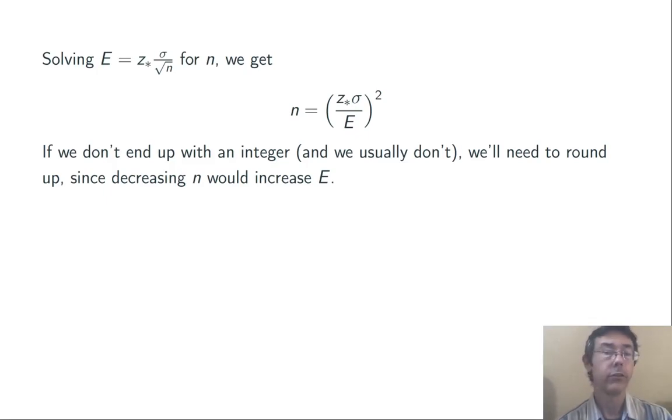Now, if we don't get an integer here, and we usually don't since z* tends to be irrational, we're going to need to round this up. Increasing sample size decreases the margin of error. If we were to round down, decreasing n, we would potentially be increasing the margin of error past the threshold E that we've set.